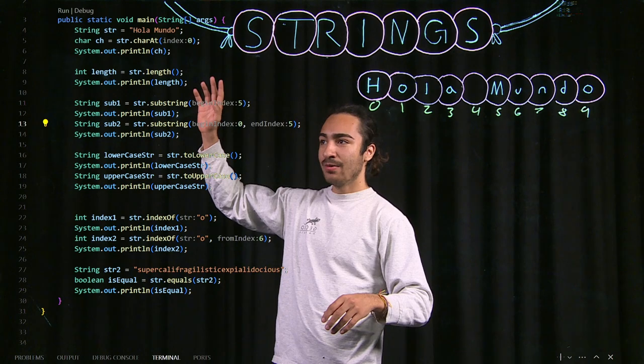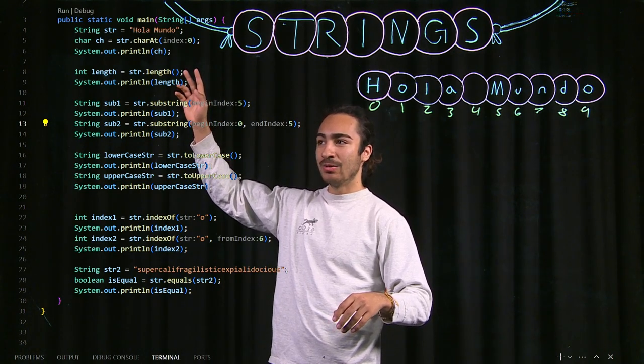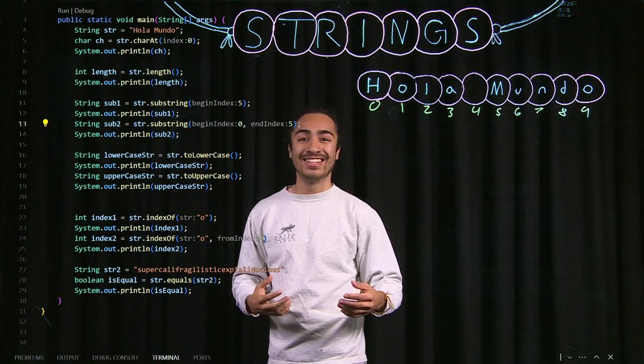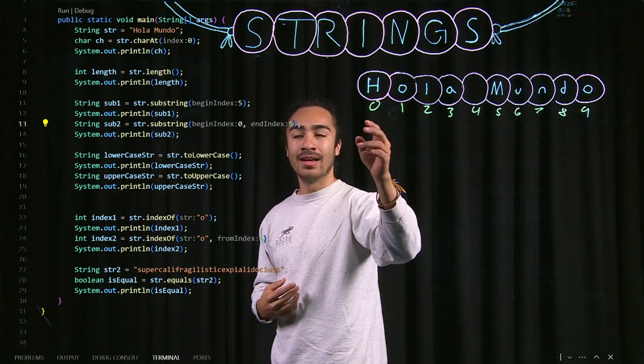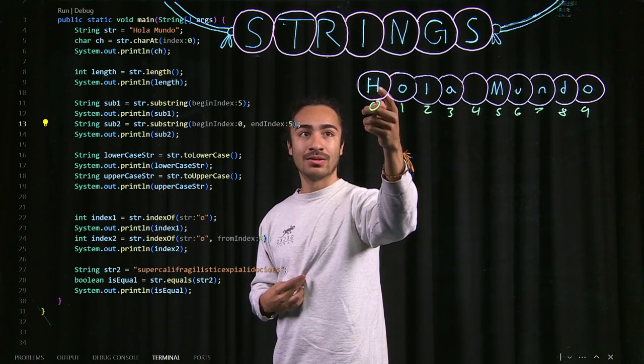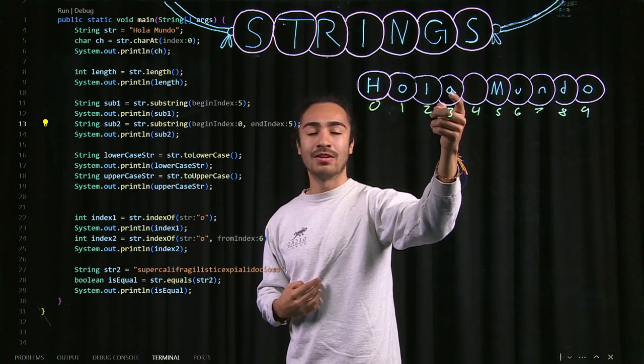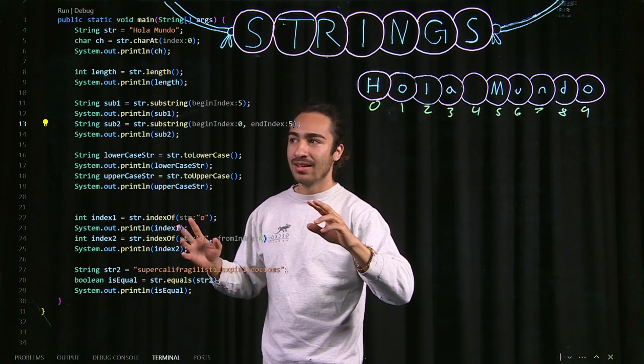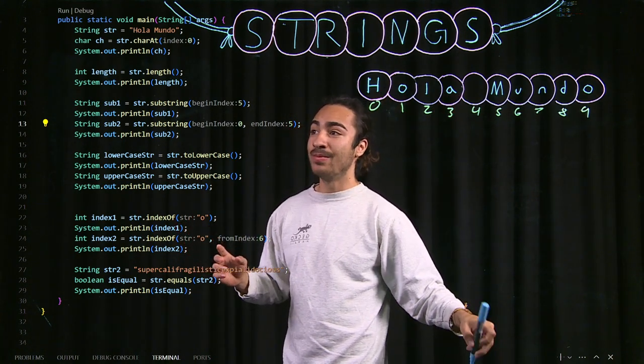We're starting off with our first method, charAt, which gives us the character at the index. And these are the indexes. If I were to give it index zero, it would give me the character capital H. If I do three, it would give me A. That's our first output for that one.